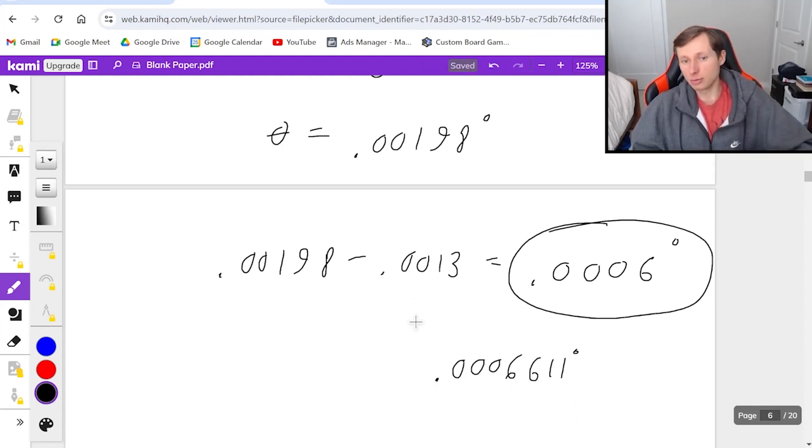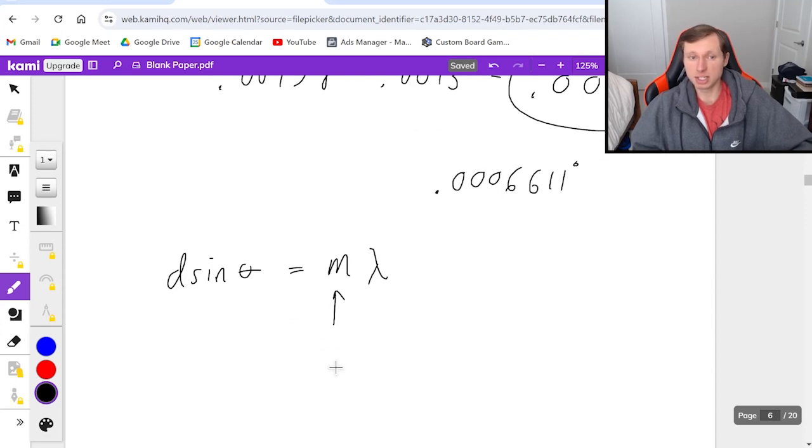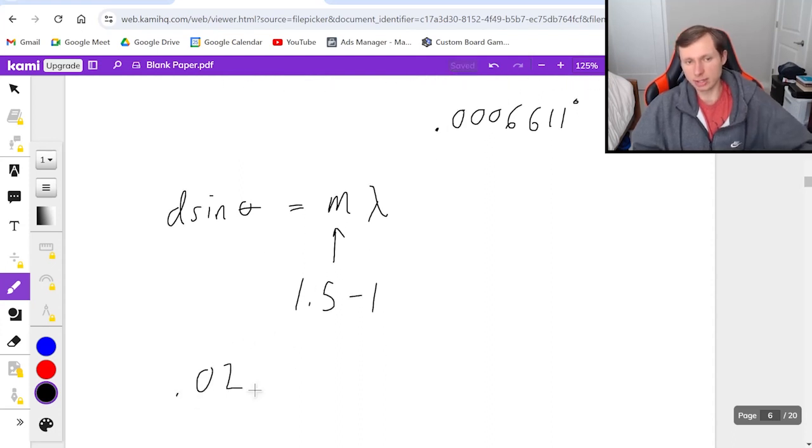One more thing before I let you go. There's another way of solving this, but it's an approximation. If you want to use this equation just once instead of twice, you can assign m as 1.5 - 1, the two m values subtracted. This won't be a perfect answer, but it's really close.